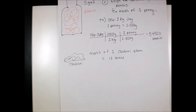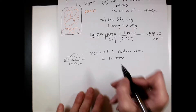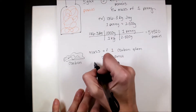12 atomic mass units is a nice number when talking about one atom at a time, but in a pile of carbon we'll have so many atoms that we need a better unit. Just like we go from kilograms to grams, we're going to go from atomic mass units to grams.